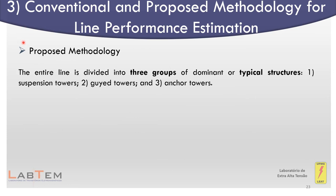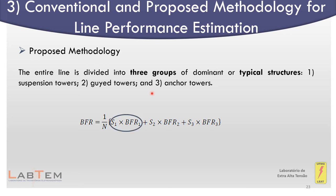In the proposed methodology, the entire line is divided into three groups of typical structures: suspension, guyed, and anchor towers. For each group, the conventional methodology is applied but considering the specific values of tower surge impedance, geometric characteristics, and specific attractive width of each group. This yields three different backflash-over rates: one associated with group one (suspension towers), one with group two (guyed towers), and one with group three (anchor towers).